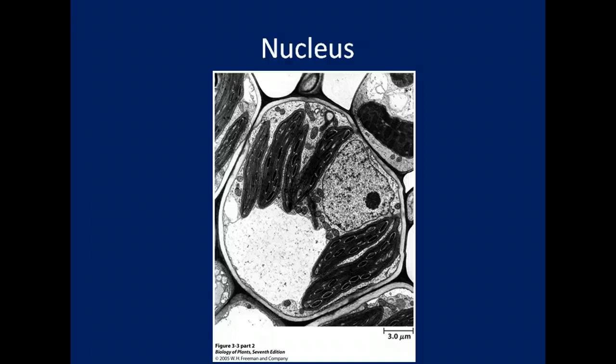The DNA found within the nucleus contains genes, and genes contain instructions for the assembly of different amino acids. Those amino acids are then packaged into units called proteins. It's important that all newly formed cells have the instructions encoded in the DNA to function properly. In plants, all cells have nearly the same genetic information, and we'll talk about how genetic information is passed on a little bit later.